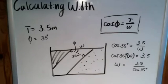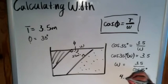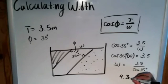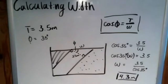Now I'll use my calculator just to find that number real quick. Cosine of 35 degrees... That gives you 4.3 meters, roughly. Okay. And that's all there really is to calculating width.